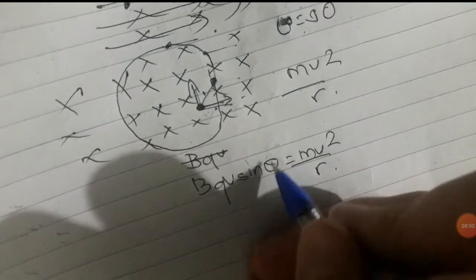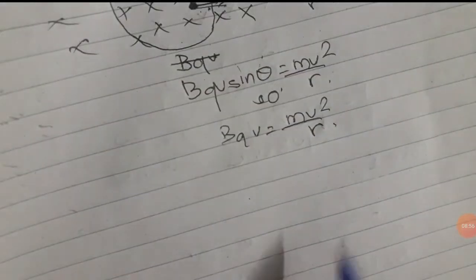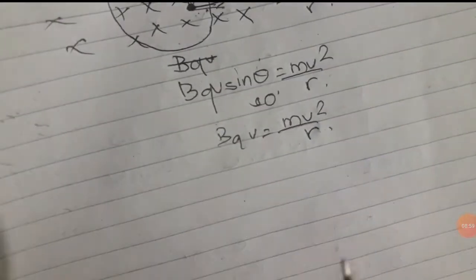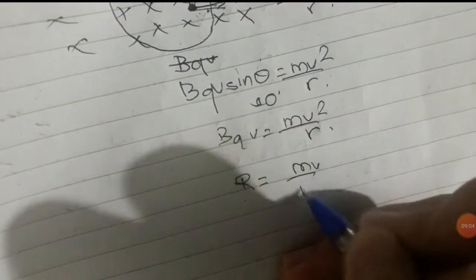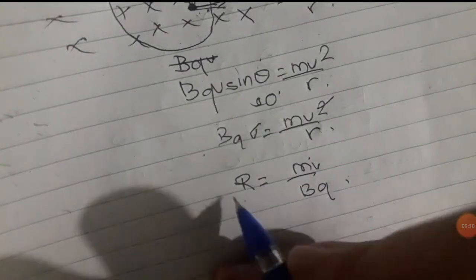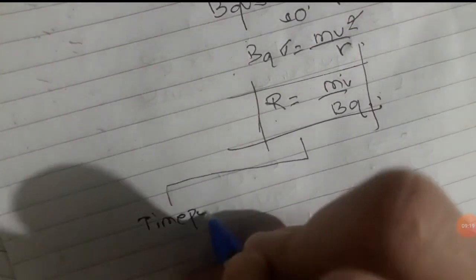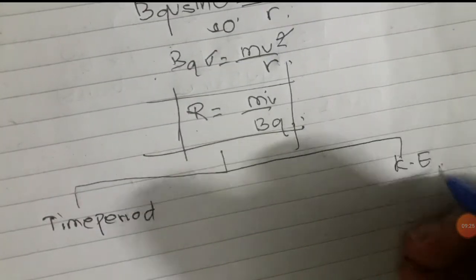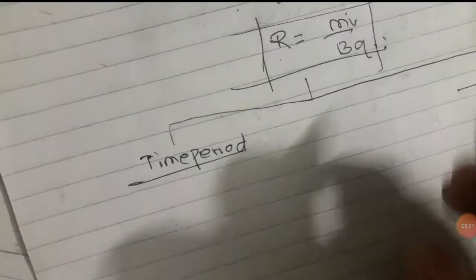From bqv = mv²/r, we derive the radius formula: r = mv/bq. This is one of the most important formulas. There are also related formulas for the time period and kinetic energy and momentum.